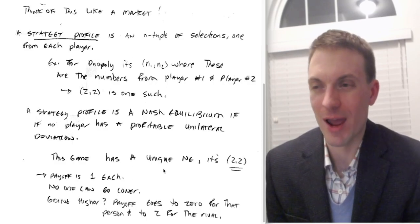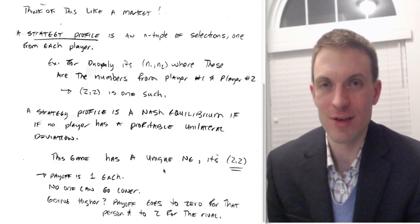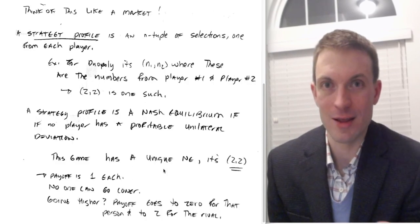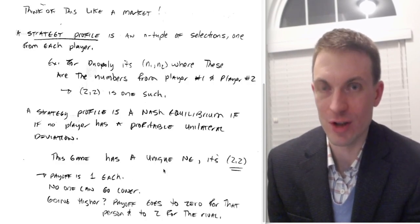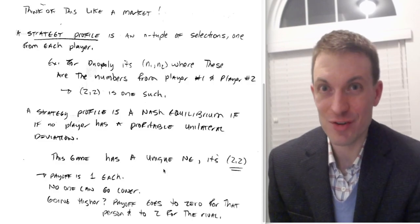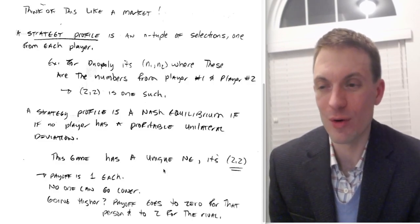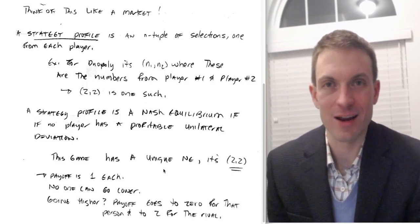Can you do better than 5? Yeah. If the other person continues to do 10, and that's what we mean by unilateral deviation, and you switch to 9, now your payoff is 9 and their payoff is 0. So 10-10 is not a Nash equilibrium.